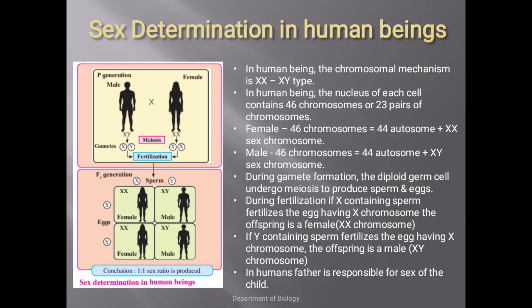If the sperm containing an X chromosome fertilizes the egg, the diploid zygote formed grows into a female child. Whereas if the sperm containing a Y chromosome fertilizes the egg, the diploid zygote grows into a male child. So in humans, the father is responsible for sex determination of the child.